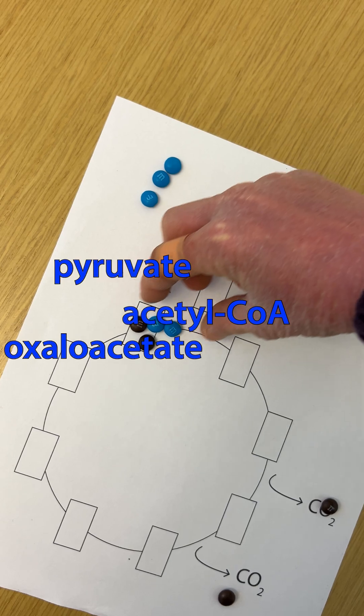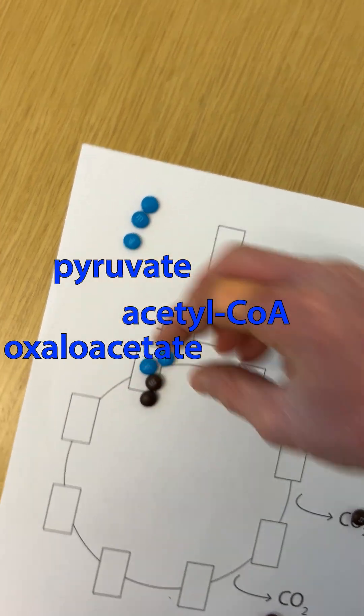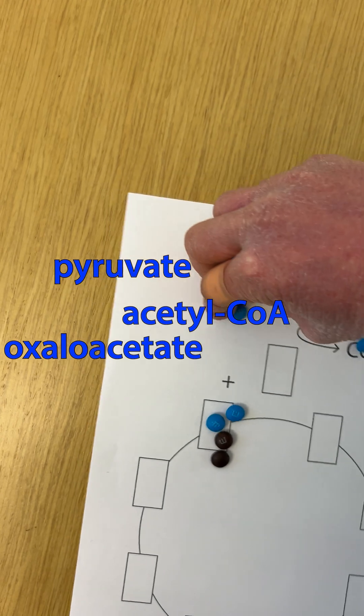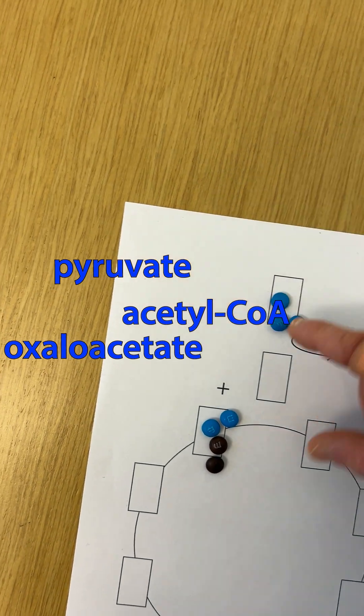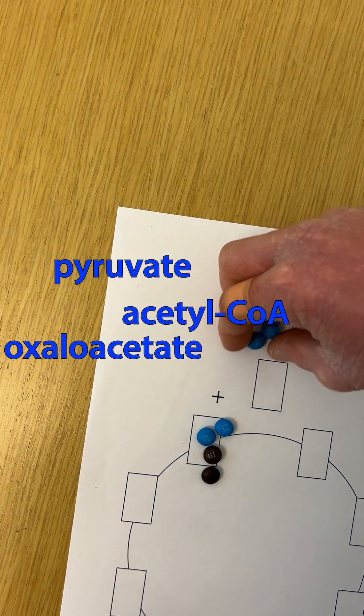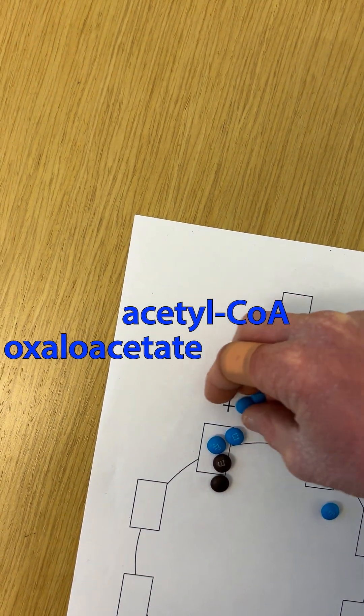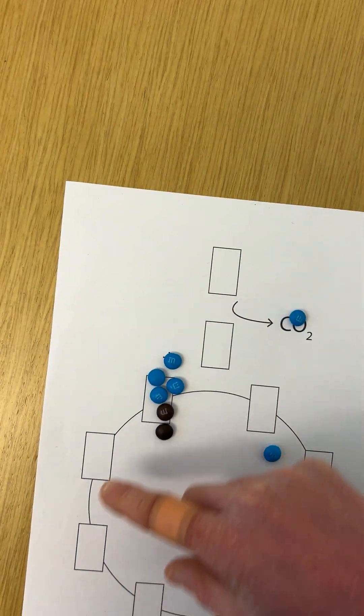Now you're basically back to the top and you've got this four-carbon molecule. You've got an oxaloacetate, so you can bring in another pyruvate, convert to acetyl-CoA, and put that onto the oxaloacetate and go around the cycle.